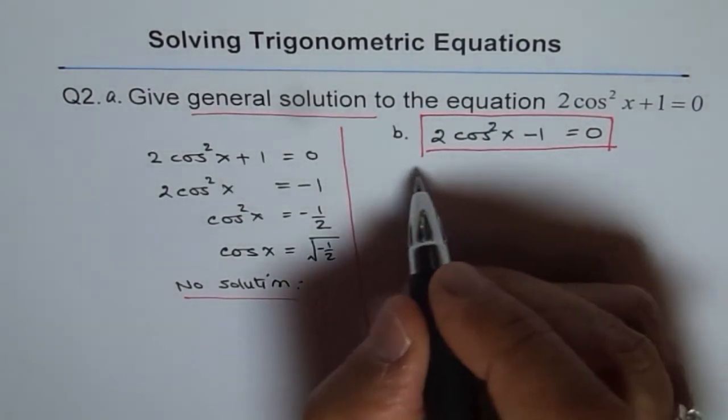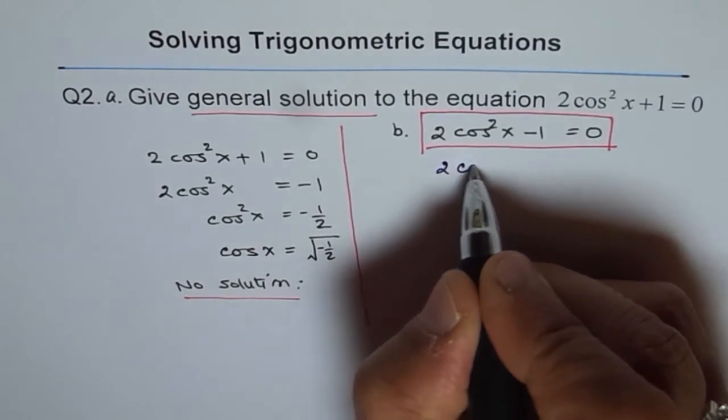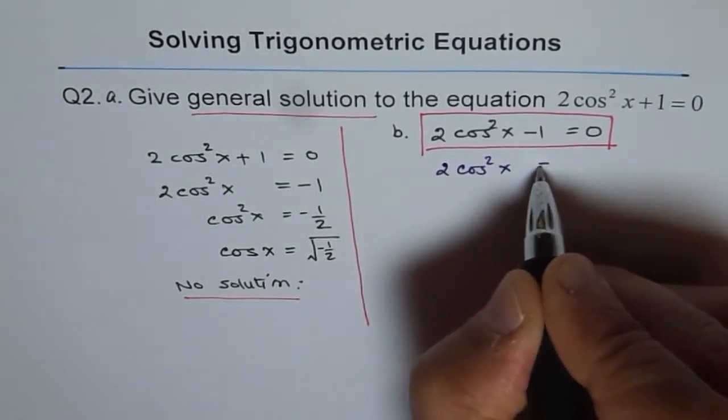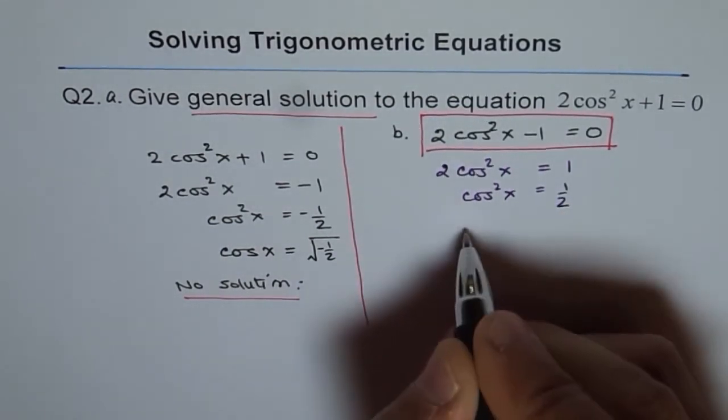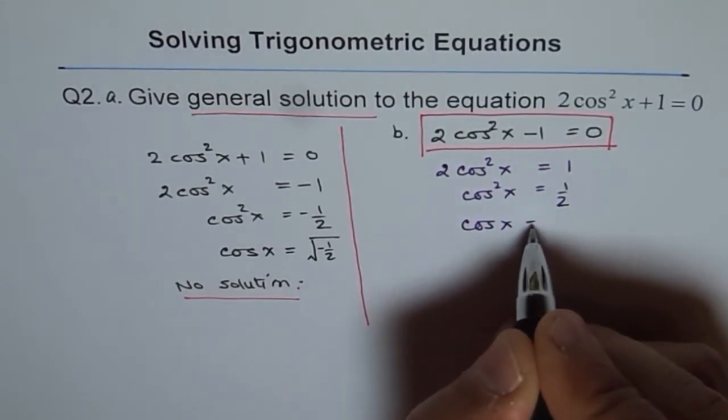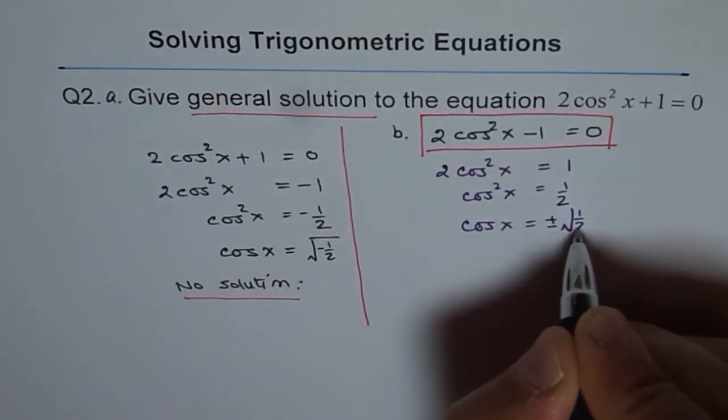In that case, cos square x can be written as, let's go by the same steps, we get 2 cos square x equals to 1, and so cos square x equals to half, and cos x equals to plus and minus square root 1 over 2.